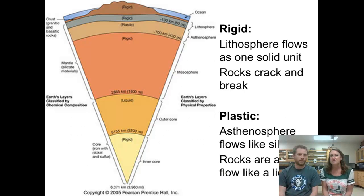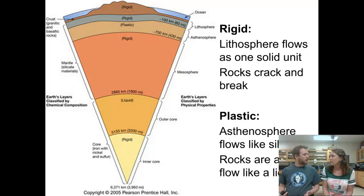First of all, quick definitions. When we talk about some of these layers, we talk about some of them being rigid and some being plastic. Rigid just means that they move as one unit - the rocks flow together and they crack and they break. And then plastic is kind of like moving like silly putty. They stretch out a little bit, they flow like a liquid. Do you use the word rigid or do you sometimes use the word brittle? Sometimes I use brittle too. So they're going to be used interchangeably - rigid and brittle.